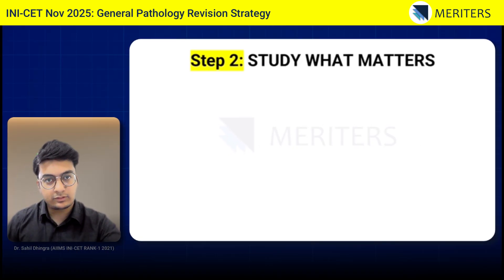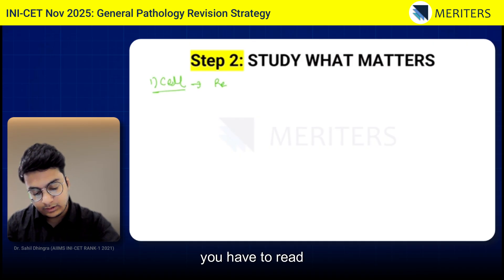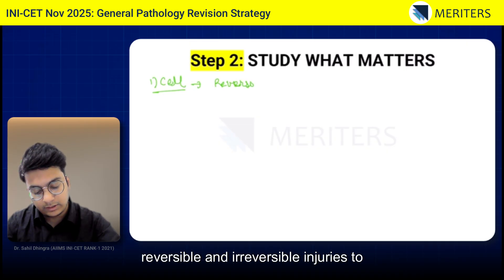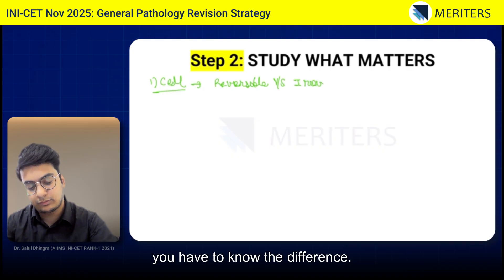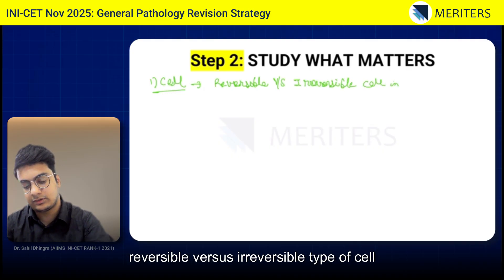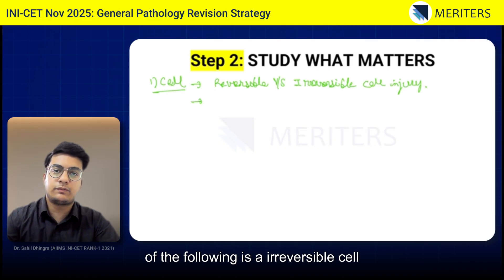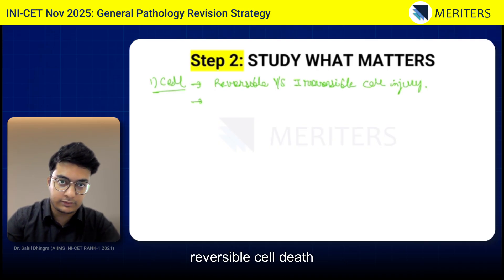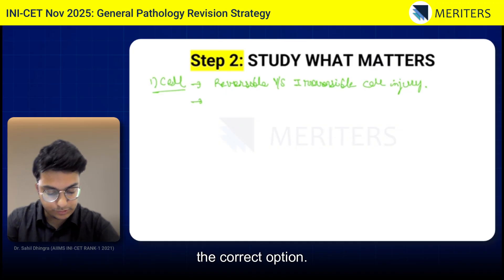Step two is to study what matters. The first chapter is Cell in Health and Disease. In cell, you have to read reversible and irreversible injuries to begin with. You need to know the difference between reversible versus irreversible cell injury. They will ask many times which of the following is an irreversible cell death or which of the following is a reversible cell death, and you have to choose the correct option.